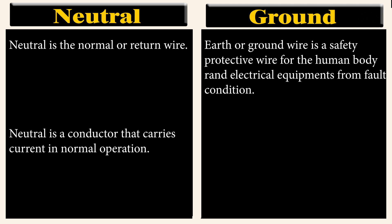Neutral is a conductor that carries current in normal operation. On the other hand, earth is a conductor that carries no current in normal operation.